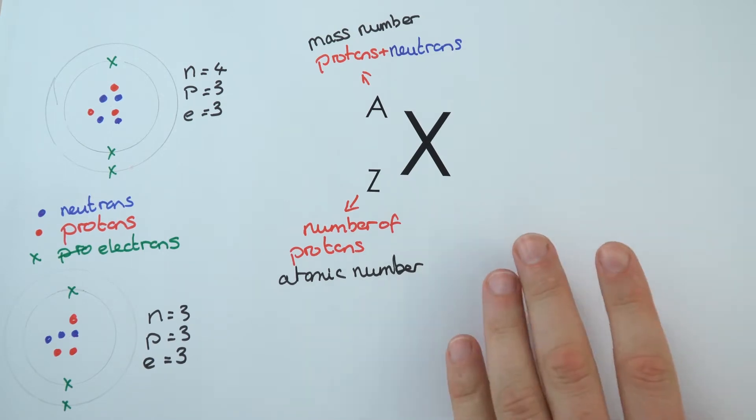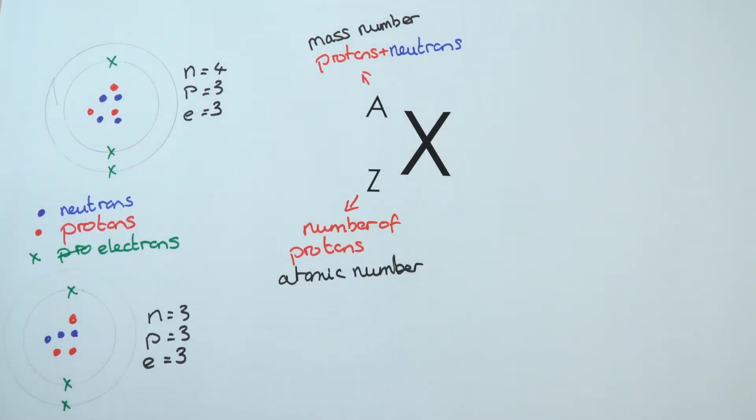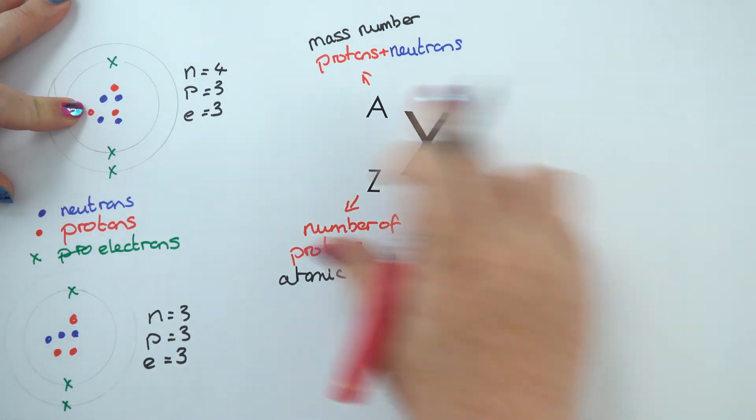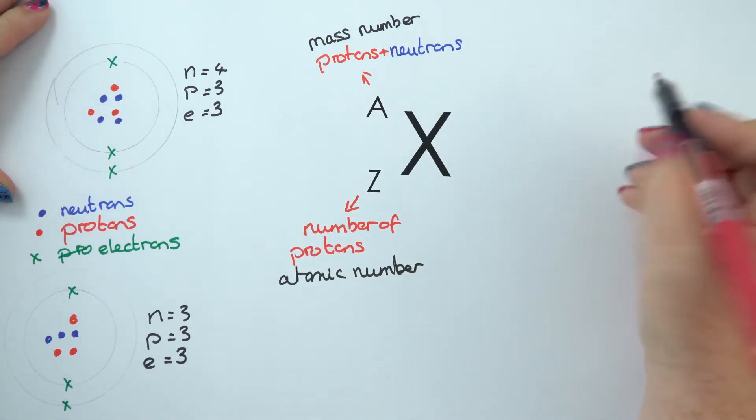Now using this notation it's very easy to represent different elements. So the one over here, for example, how do we show that? This one we'll first of all look at the number of protons, so we have three protons.